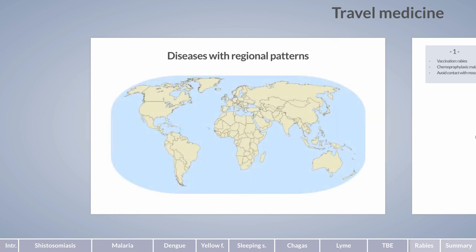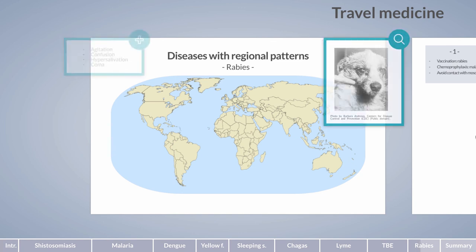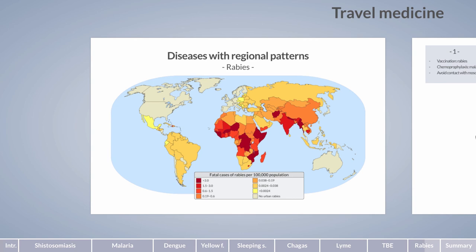Rabies is a well-known disease that occurs on a global scale, is often fatal, and is caused by lyssaviruses including the rabies virus. In encephalitic rabies, initial symptoms include agitation, confusion, and hypersalivation, followed by coma and death. Rabies is usually transmitted through the bite of an infected animal, most likely a dog or bat. High-risk regions include Africa and Southeast Asia, though transmission through wild animals can occur in almost all geographic locations. Pre-exposure vaccination is ideal; however, post-exposure vaccination combined with rabies immunoglobulin is also particularly effective.